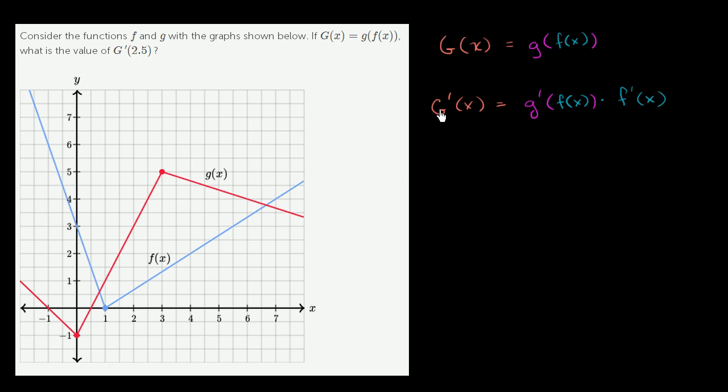If we want to evaluate what G prime of 2.5 is, then every place we see an x here, we have to throw a 2.5 in there. So let's try to do that.